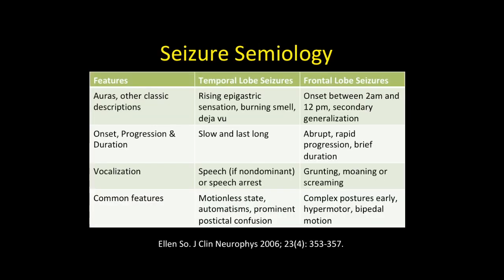A helpful summary from Tim Shepard on differentiating temporal versus frontal lobe seizures: temporal lobe seizures feature limbic auras — burning smell, deja vu, epigastric rising — are slow and prolonged, and present with an emotionless state or postictal confusion. Frontal lobe seizures typically occur at night, are rapid and brief, and feature complex postures, hypermotoricity, and bipedal or leg movements.